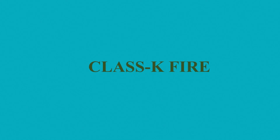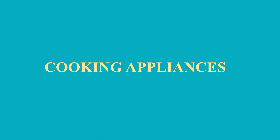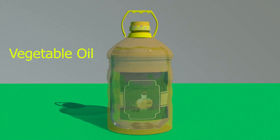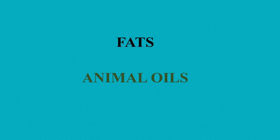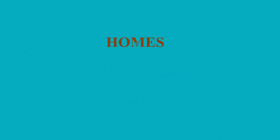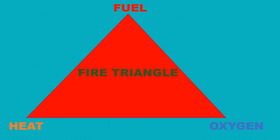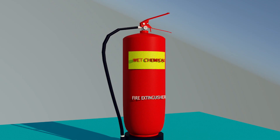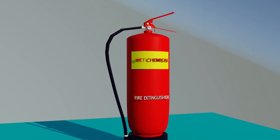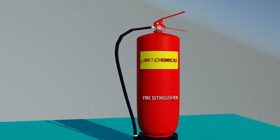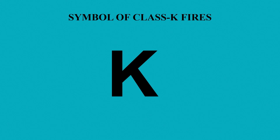Another important type of fires are Class K fires. Class K fires generally occur in cooking appliances that use cooking media like vegetable oils, fats, animal oils, etc. These types of fire commonly occur at homes or restaurants. These fires are extinguished by cutting the heat element of the fire triangle. Wet chemical powder is used to extinguish such fires. These extinguishers are identified by the symbol capital letter K.